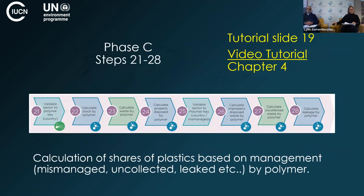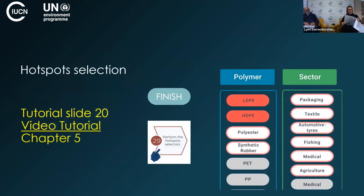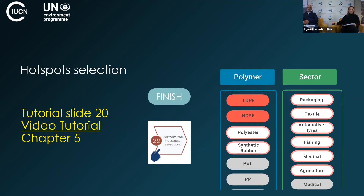Once you've finished data collection and processing, you go into Phase B, which covers waste management data — validating littering rates, release rates, and calculating plastic shares by management sector. This is about 10 steps as well, covered in tutorial slide 18 and video chapter 3. Phase C then covers the calculation of shares of plastics based on management type — mismanaged waste, uncollected waste, leaked plastic — by polymer, in tutorial slide 19 and video chapter 4.